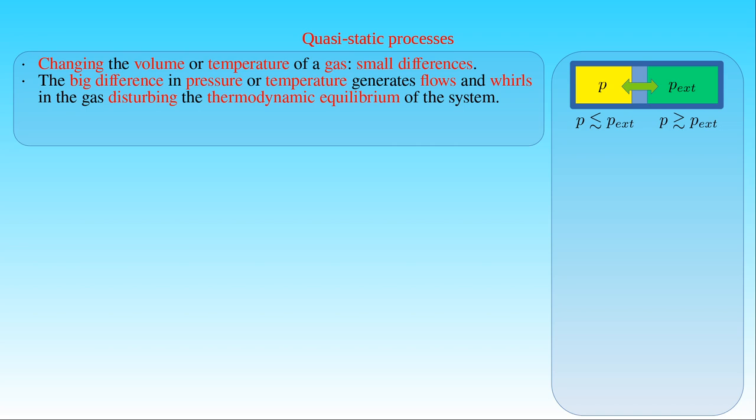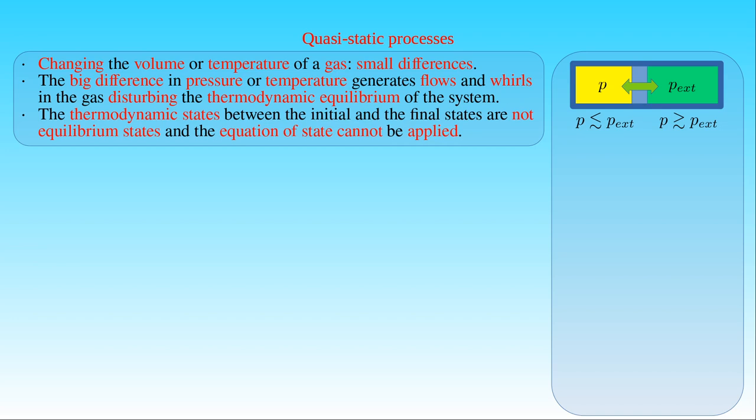Therefore, the thermodynamic states which the system is passing through while it is taken from its initial state to its final one cannot be considered as equilibrium states. However, the equation of state for ideal gas only describes its behavior in equilibrium, and it is not clear at all what the functional relationship is between the state variables of an ideal gas in such a process, and how to describe the evolution of a non-equilibrium system in the state space.